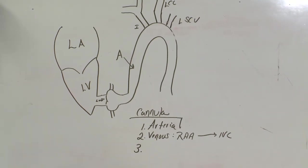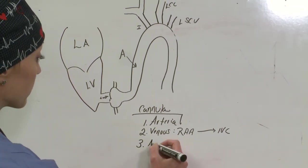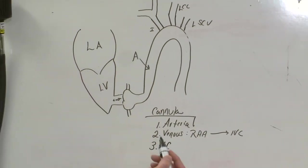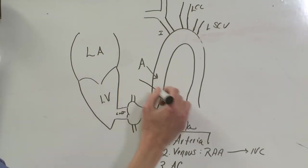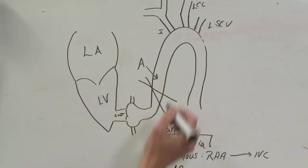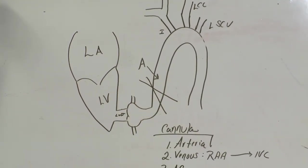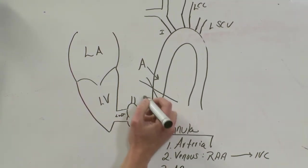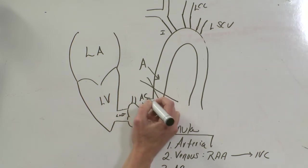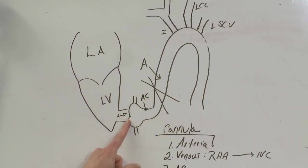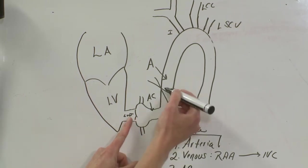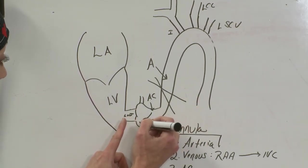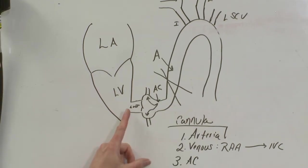The third cannula that you would place is the antegrade cardioplegia. We'll just say AC. So where's that going to go? Let me show you. I'm going to put a big X right here. That X stands for your cross clamp, okay? That's where your cross clamp goes. This is where your antegrade cardioplegia goes. So your aortic valve closes here while you're on pump. You have your cross clamp here. So when you give antegrade cardioplegia, it goes straight down the coronaries and stops your heart.